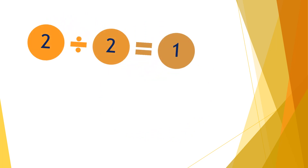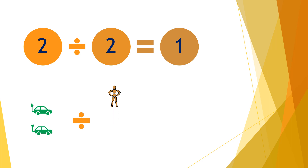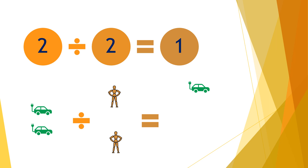The first question is two divided by two equals one. So if you have two cars divided by two people, each person will receive one car.